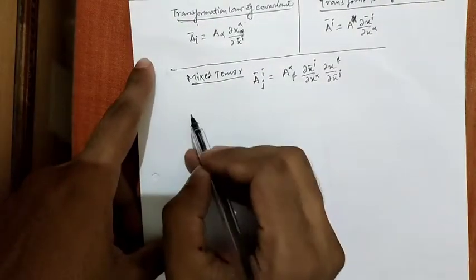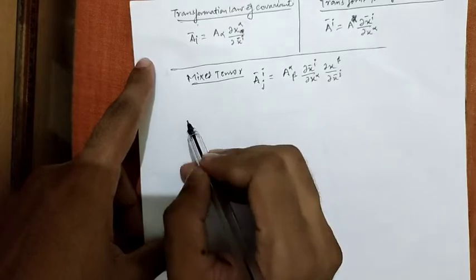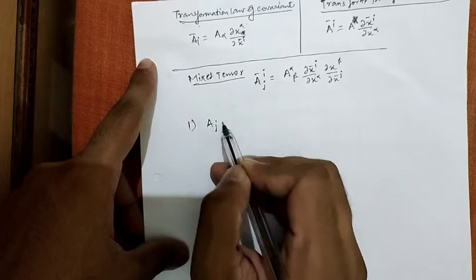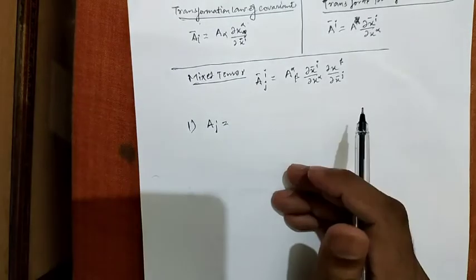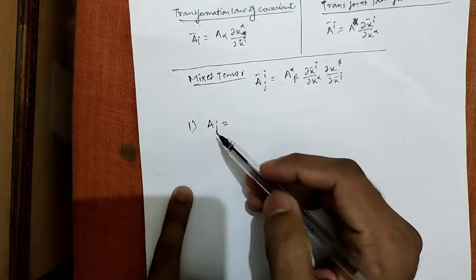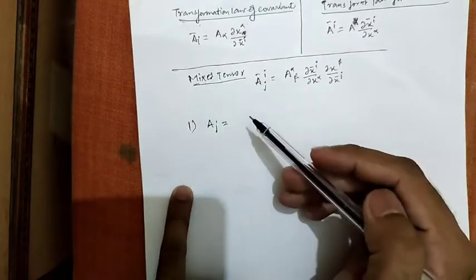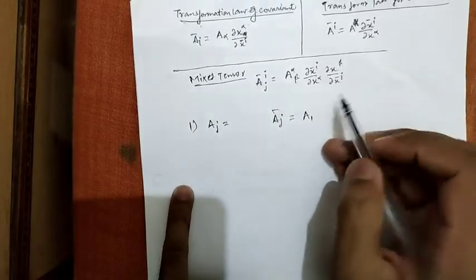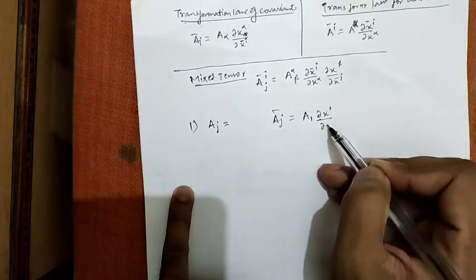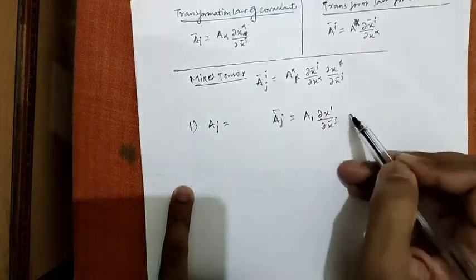Let's do some examples to understand these transformations in depth. The first one is a_j. From first glance, this is a covariant component. The law of transformation says that ā_j = a_1 (∂x^1 / ∂x̄^j). This is simply the transformation of a_j.